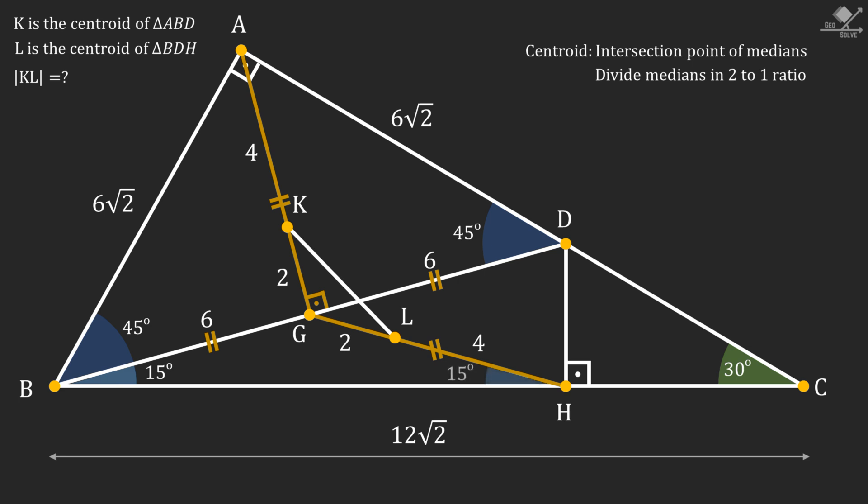We can see that angle BHG will be 15 degrees, and from exterior angle theorem, angle HGD will be 30 degrees. For the final step, let's focus on the blue shaded triangle in the middle and isolate it to work clearly.